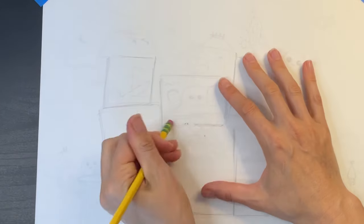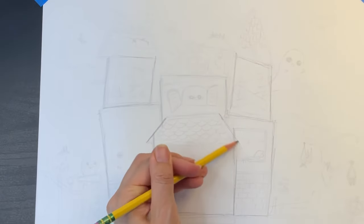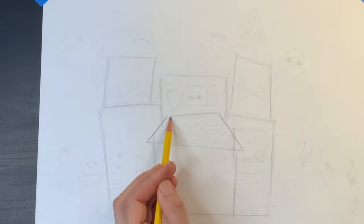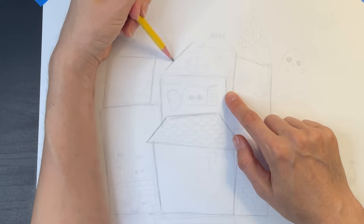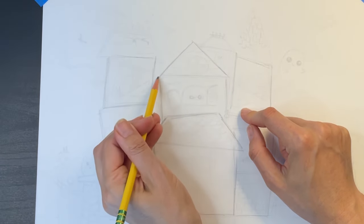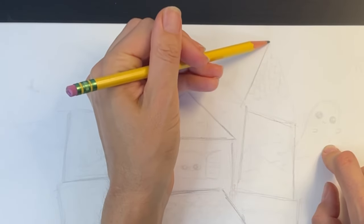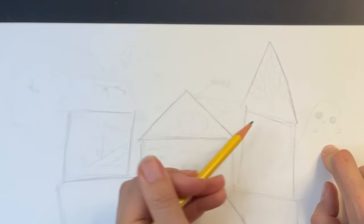Now I'm going to erase the top line of the middle square and add a trapezoid shaped roof. Now I'm going to add a couple triangle shaped roofs. Notice how this triangle is shorter and this triangle is longer and skinnier. It's fun to play around with different sizes and shapes.